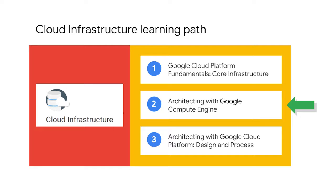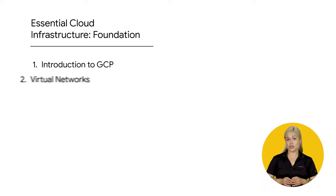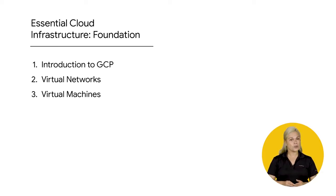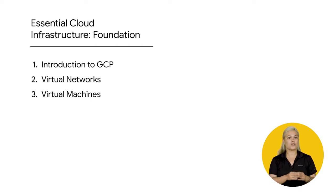The Architecting with Google Compute Engine courses are part of the Cloud Infrastructure Learning Path. This path is designed for IT professionals who are responsible for implementing, deploying, migrating, and maintaining applications in the cloud. The prerequisite for these courses is the Google Cloud Platform Fundamentals Core Infrastructure course, which you can find in the link section for this video. The Architecting with Google Compute Engine series consists of three courses. Essential Cloud Infrastructure Foundation is the first course. In that course, we start by introducing you to GCP and how to interact with the GCP console and Cloud Shell. Next, we'll get into virtual networks, and you will create VPC networks and other networking objects. Then we'll take a deep dive into virtual machines, and you will create virtual machines using Compute Engine.